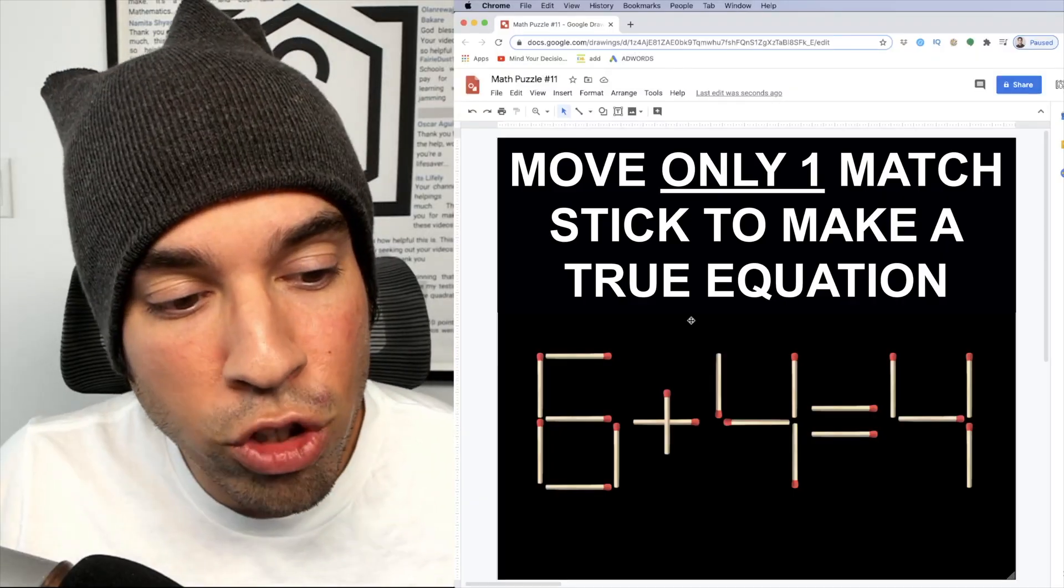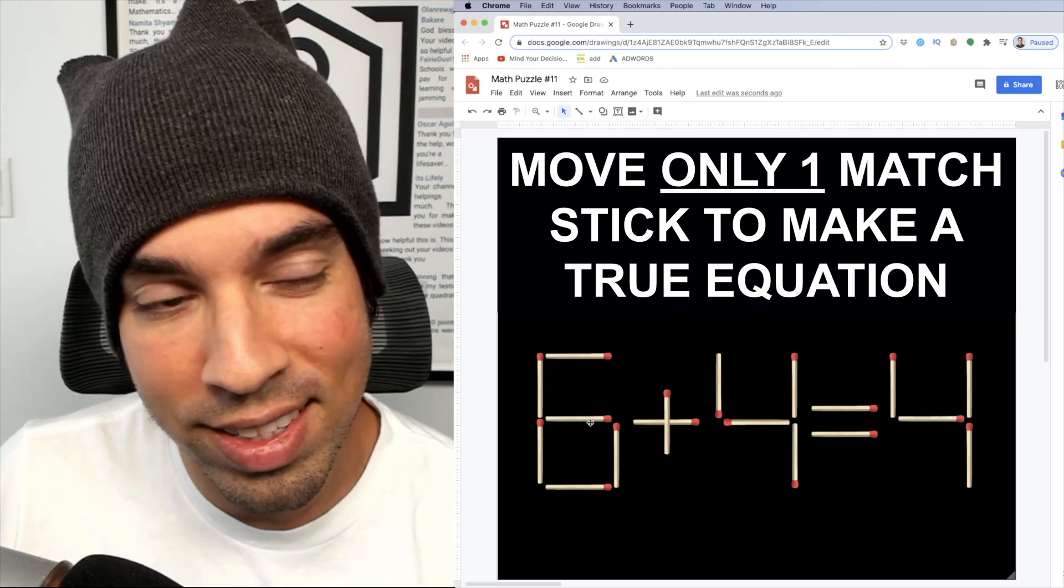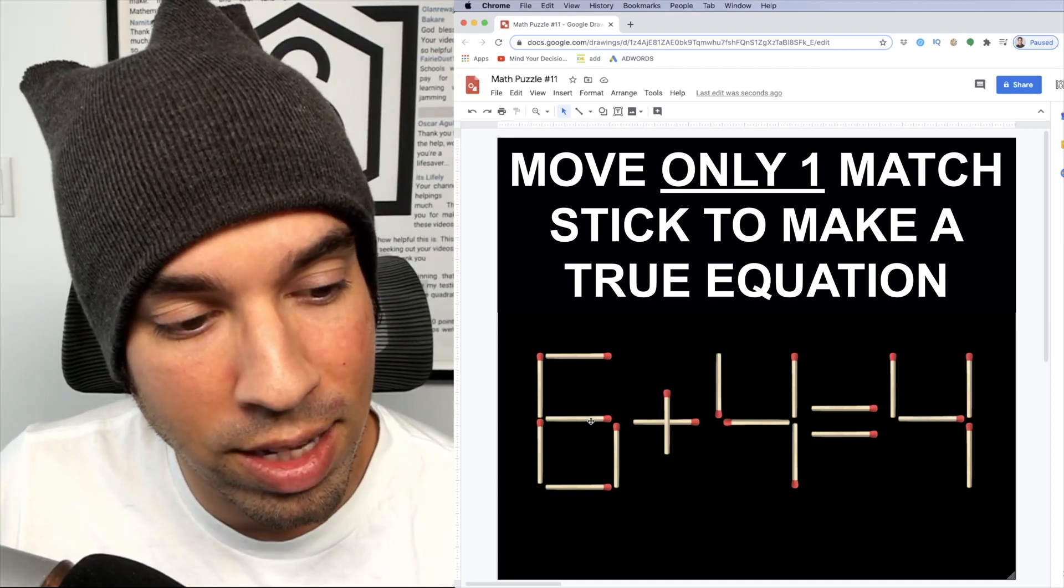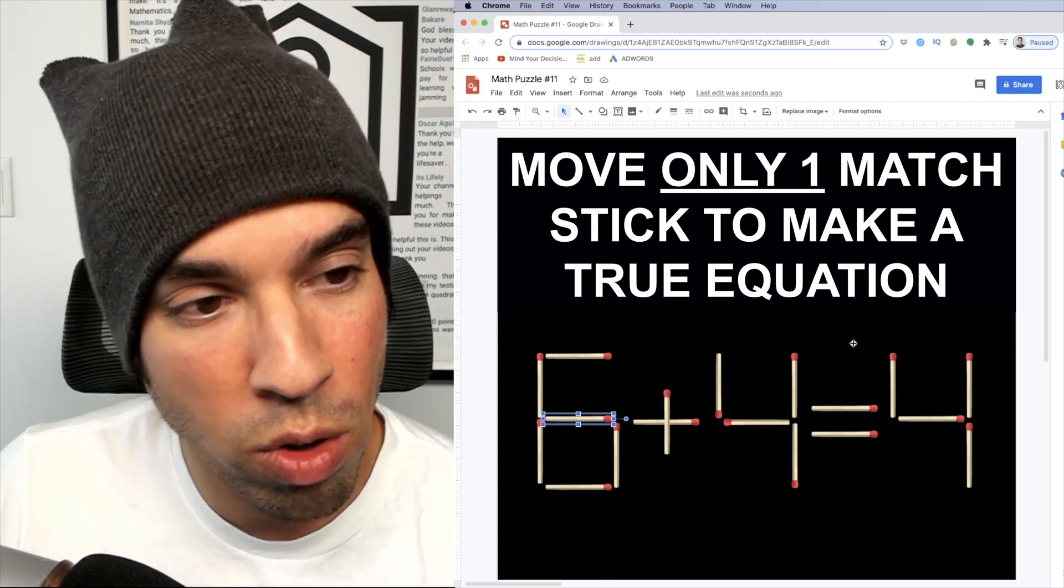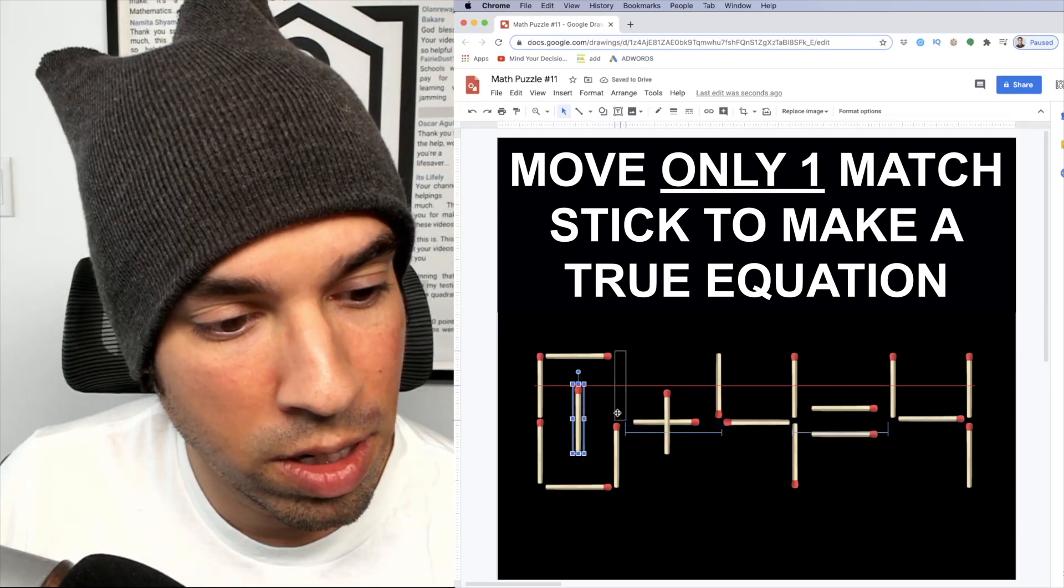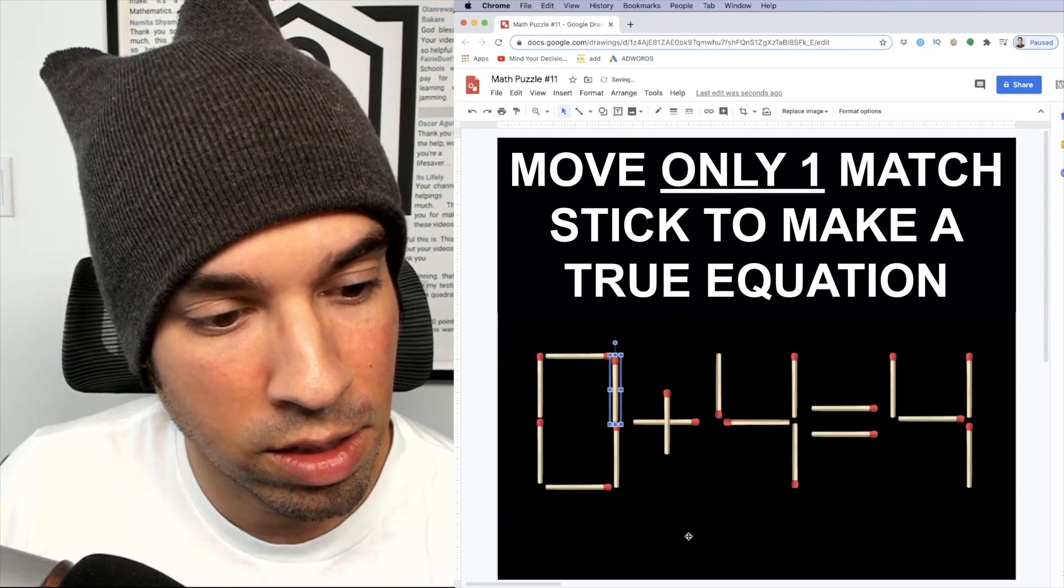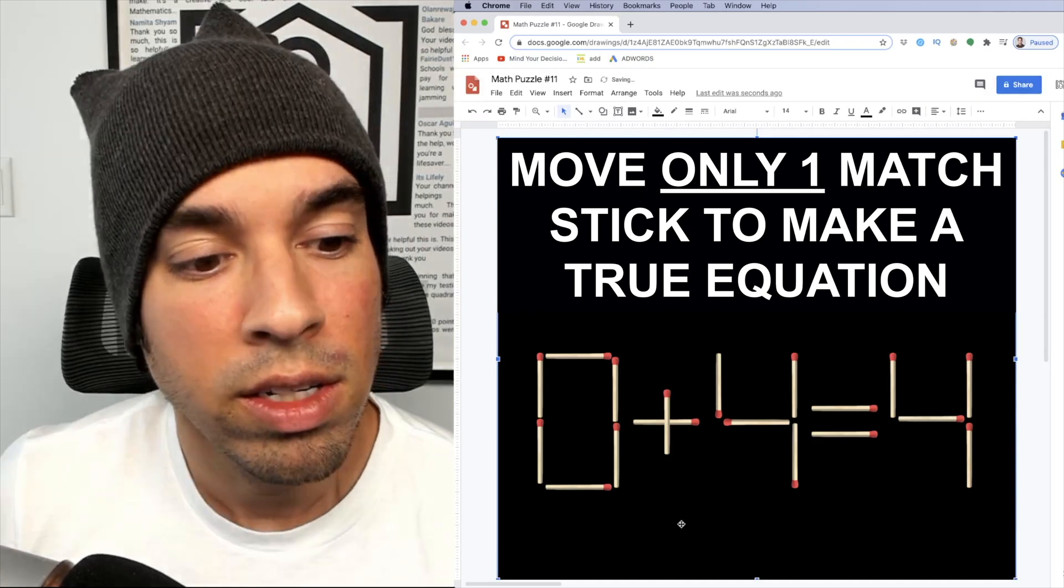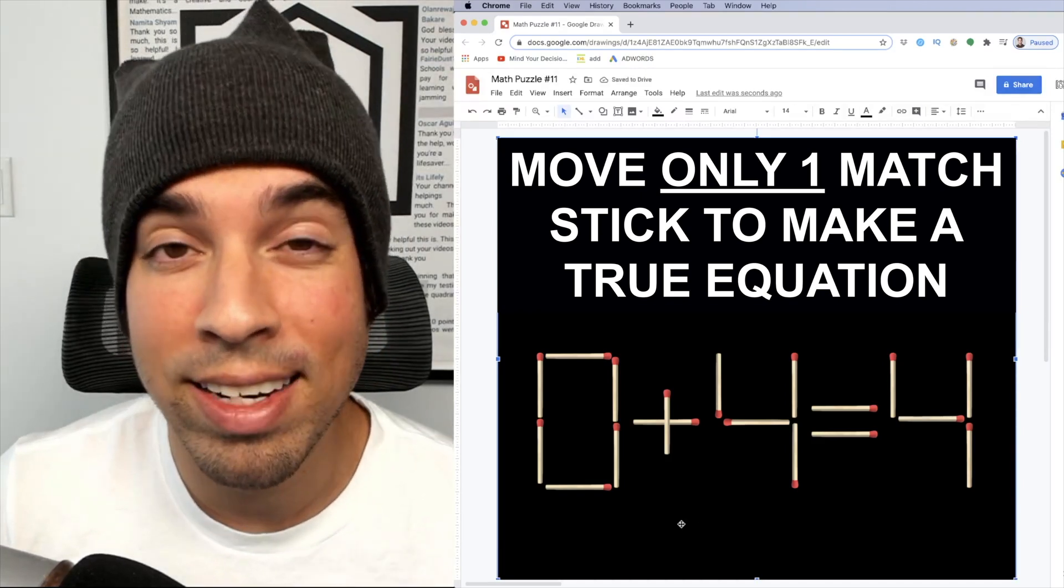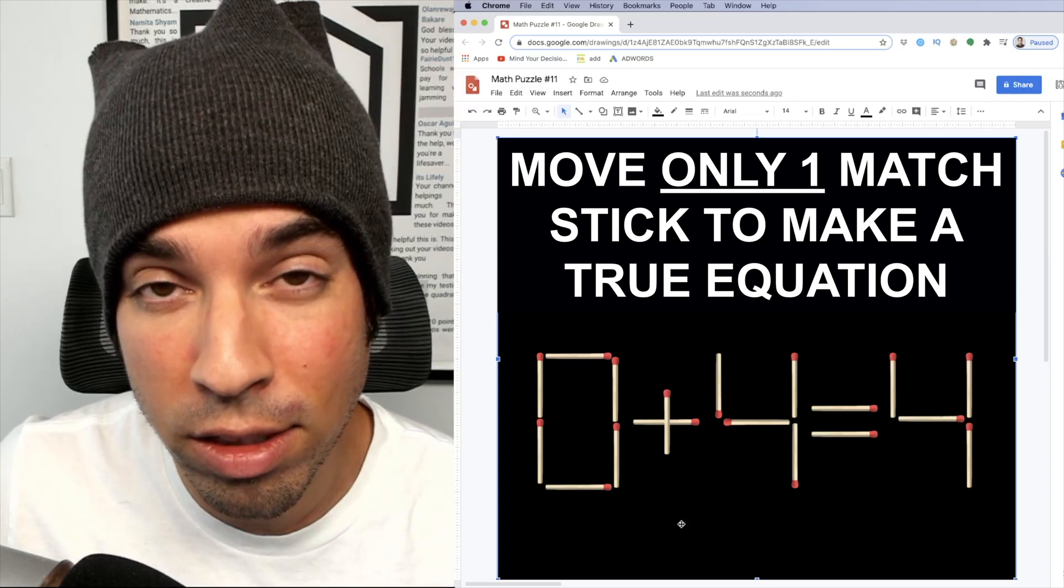So the first solution to this equation involves just this six right here. And what we're gonna do is we're gonna take this middle stick and we're gonna rotate it and slide it up here to make a zero. So of course then we have zero plus four equals four. That is a true solution, a true equation and a solution. So that is solution number one.